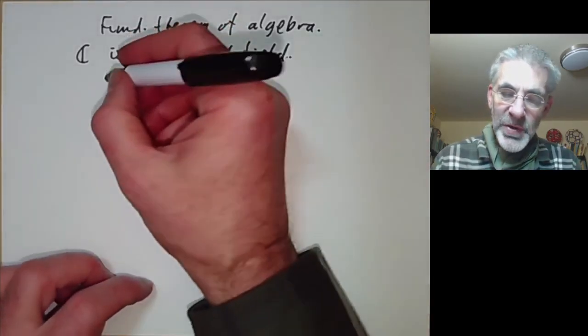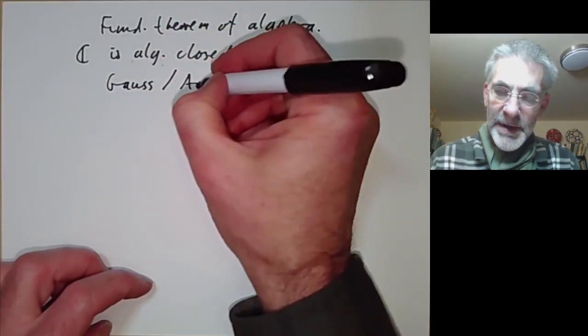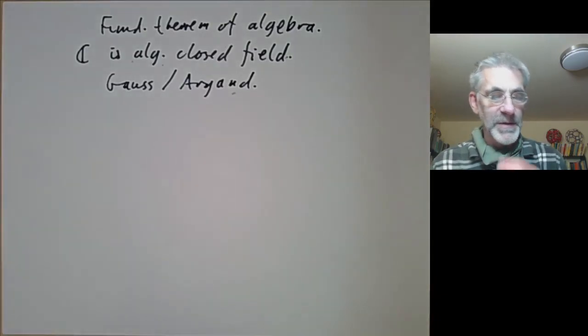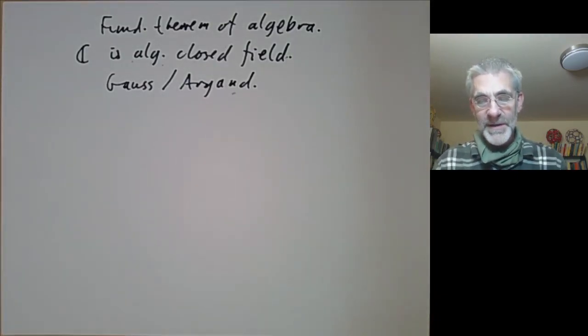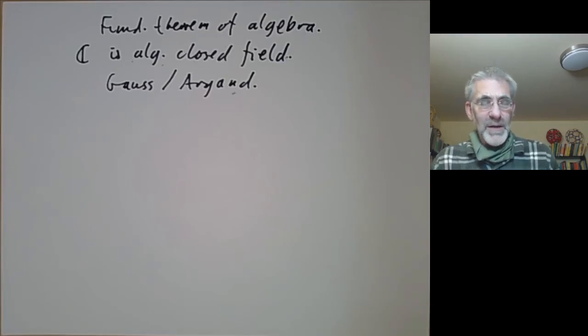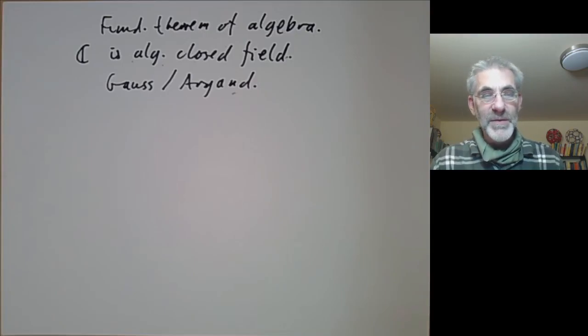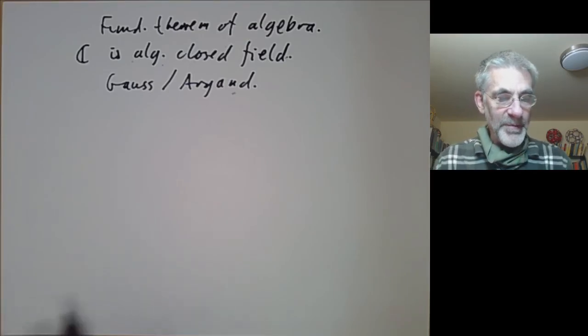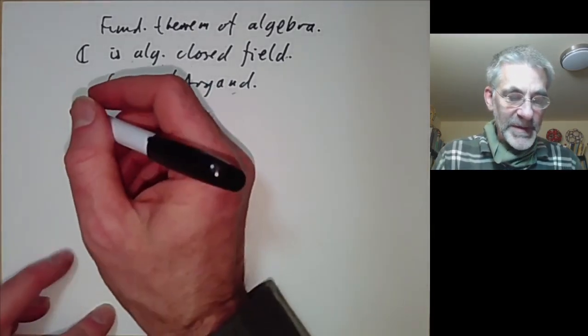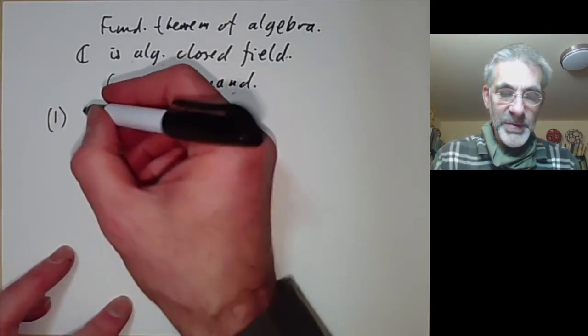The first proofs of it seem to be due to either Gauss or Argand, both around 1800. Gauss's proof was before Argand's proof but it's not entirely clear that Gauss's proof was completely watertight. There may have been a small topological gap in it. So we've already given two proofs or mentioned two proofs.